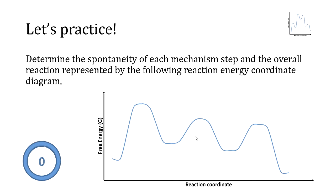Determining the spontaneity of each step involves comparing the free energy of reactants, products, and intermediates. We ignore the transition states because they have to do with the rate of the reaction and not the spontaneity.